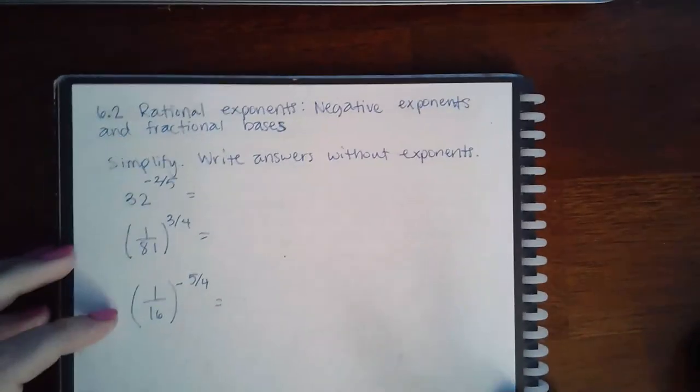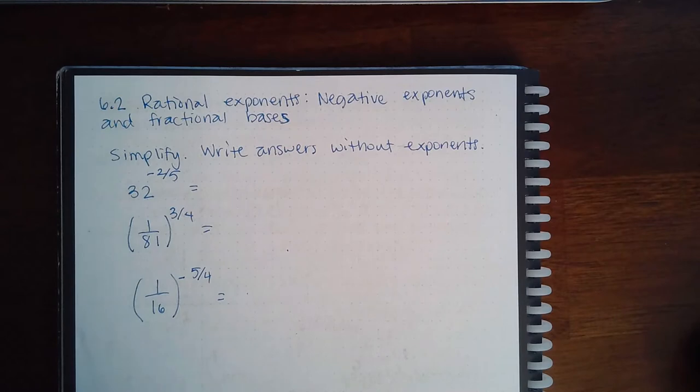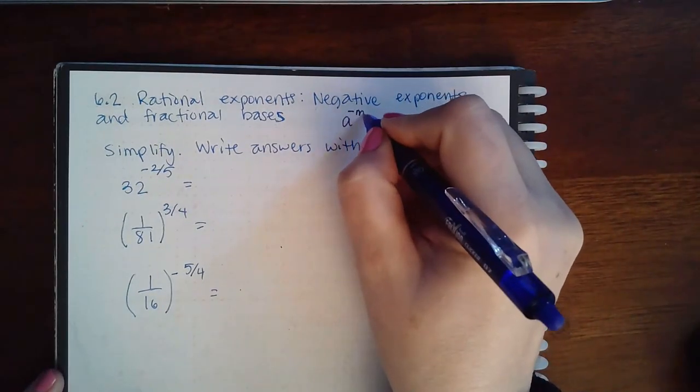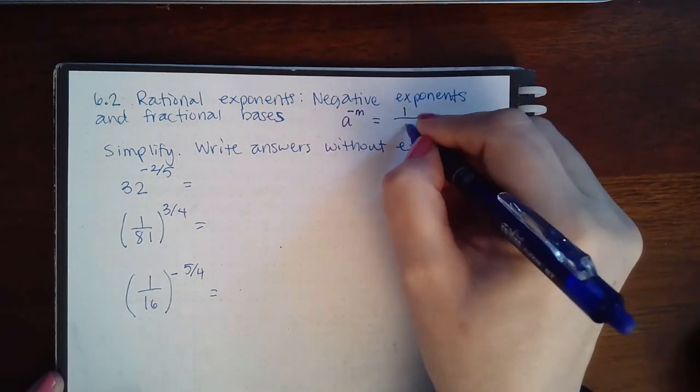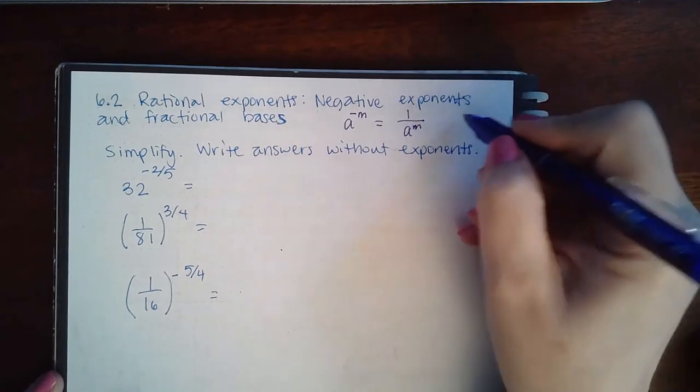Here we have 6.2 rational exponents, negative exponents, and fractional bases. So I'm going to apply the same thing but we have negative exponents this time. We have to remember what negative exponents mean. If you have something with a negative exponent, it means that that will now go into the denominator and become positive, and vice versa.